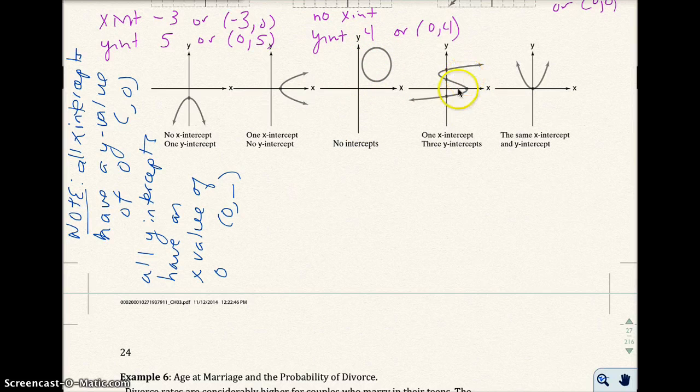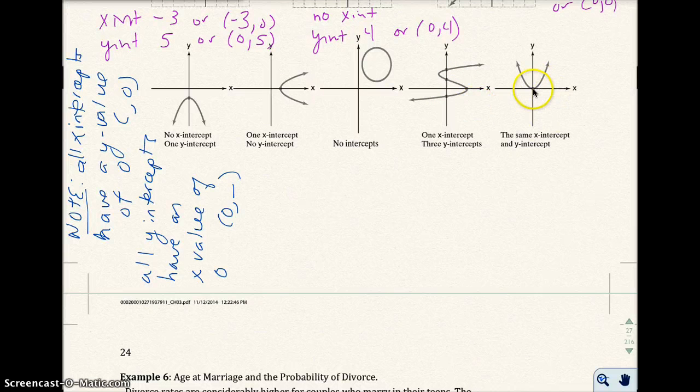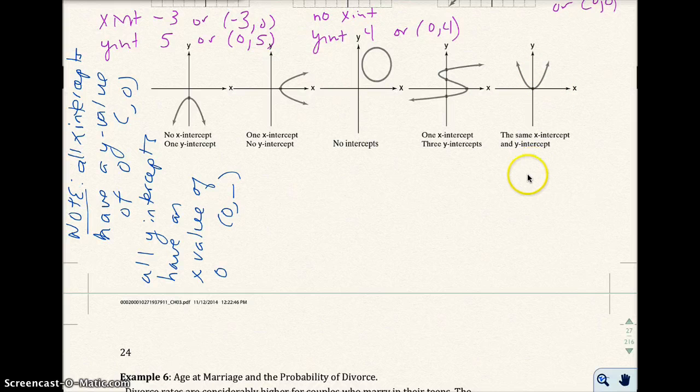This graph here is an interesting graph, it has one x-intercept right here and it has one, two, three y-intercepts. And this graph has the same x- and y-intercept right here. It crosses both the x-axis and it crosses both the y-axis and they have the same x- and y-intercepts. Okay, so we'll see, we'll talk more about x- and y-intercepts throughout the semester.